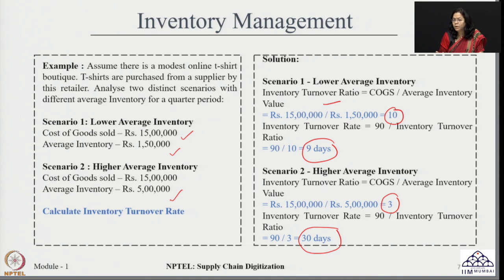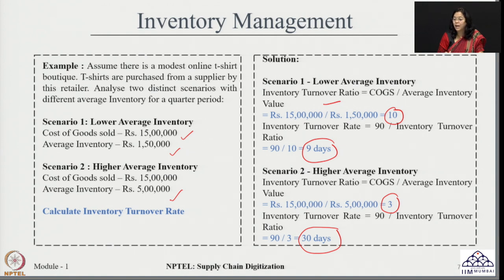Let us analyze what these numbers mean. Inventory turnover ratio tells us how many times inventory is sold or used. A ratio of 10 means very high turnover — the inventory is used about 10 times per year. Inventory turnover rate of 9 days means the company is able to sell all available inventory within 9 days, after which it must refill inventory levels.